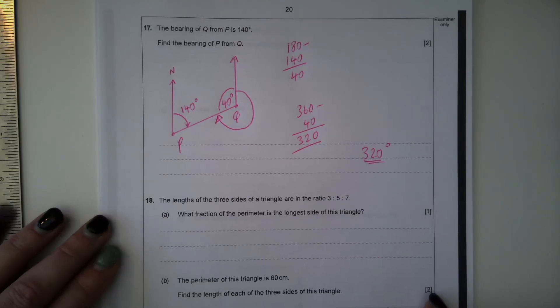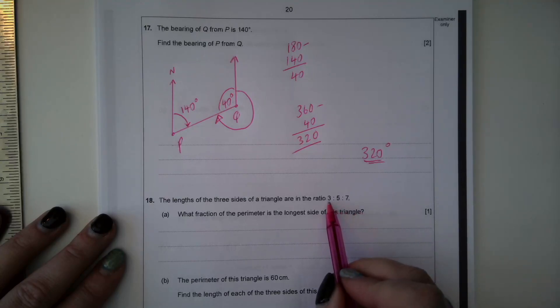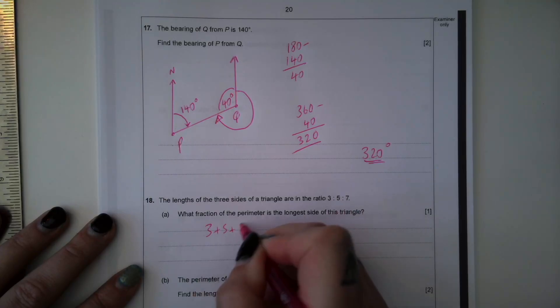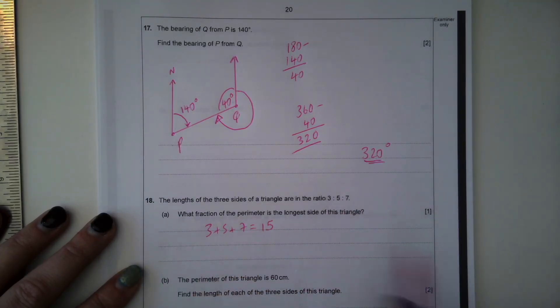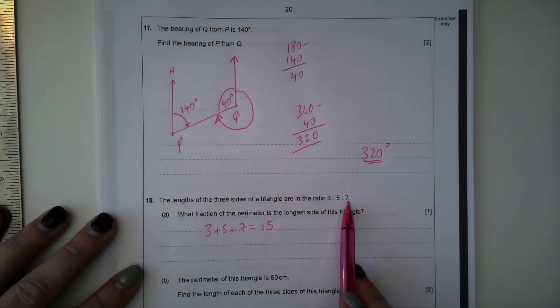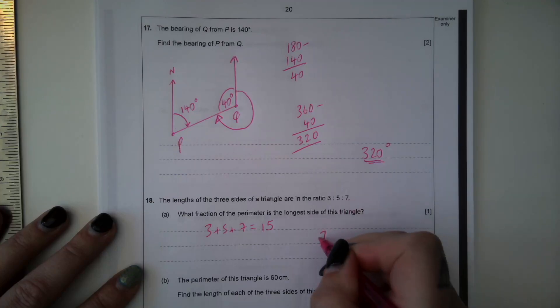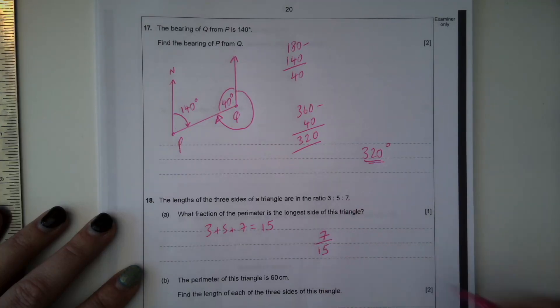The length of the three sides of a triangle are in the ratio 3 to 5 to 7. What fraction of the perimeter is the longest side of this triangle? Okay, so the perimeter would be 3 plus 5 plus 7, which is 15, and the longest side is the 7, so the fraction of the perimeter would be 7 out of 15.